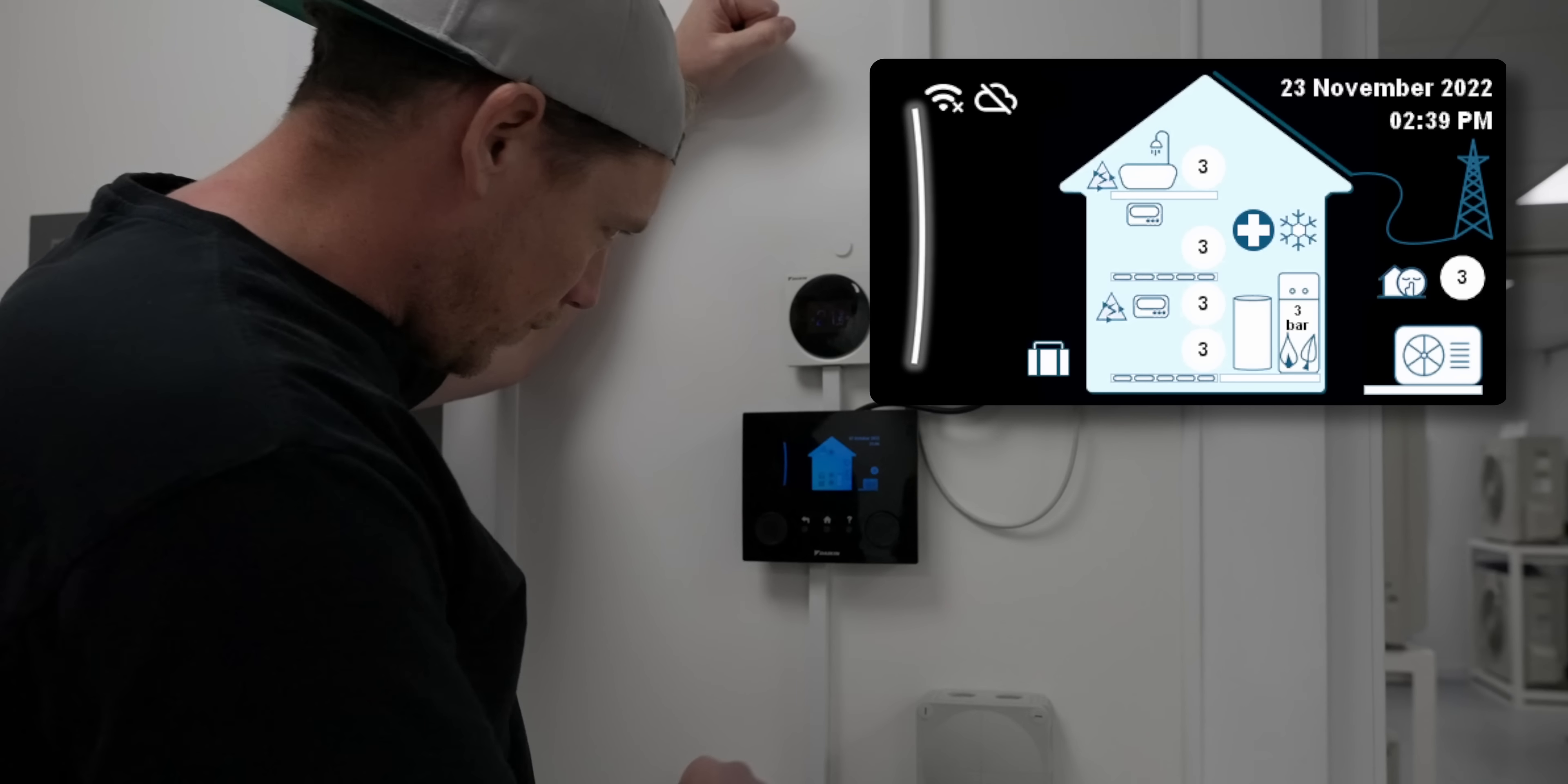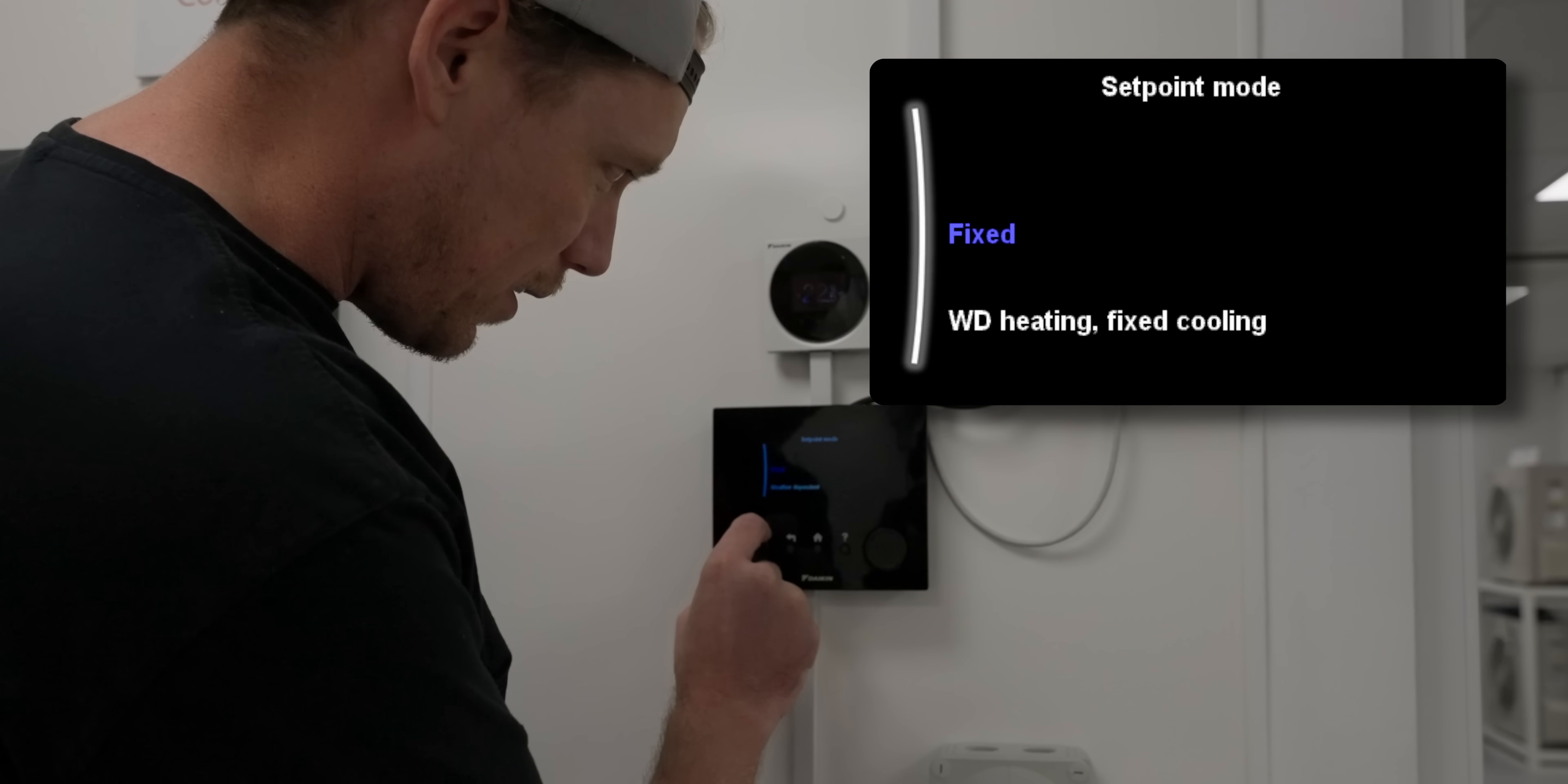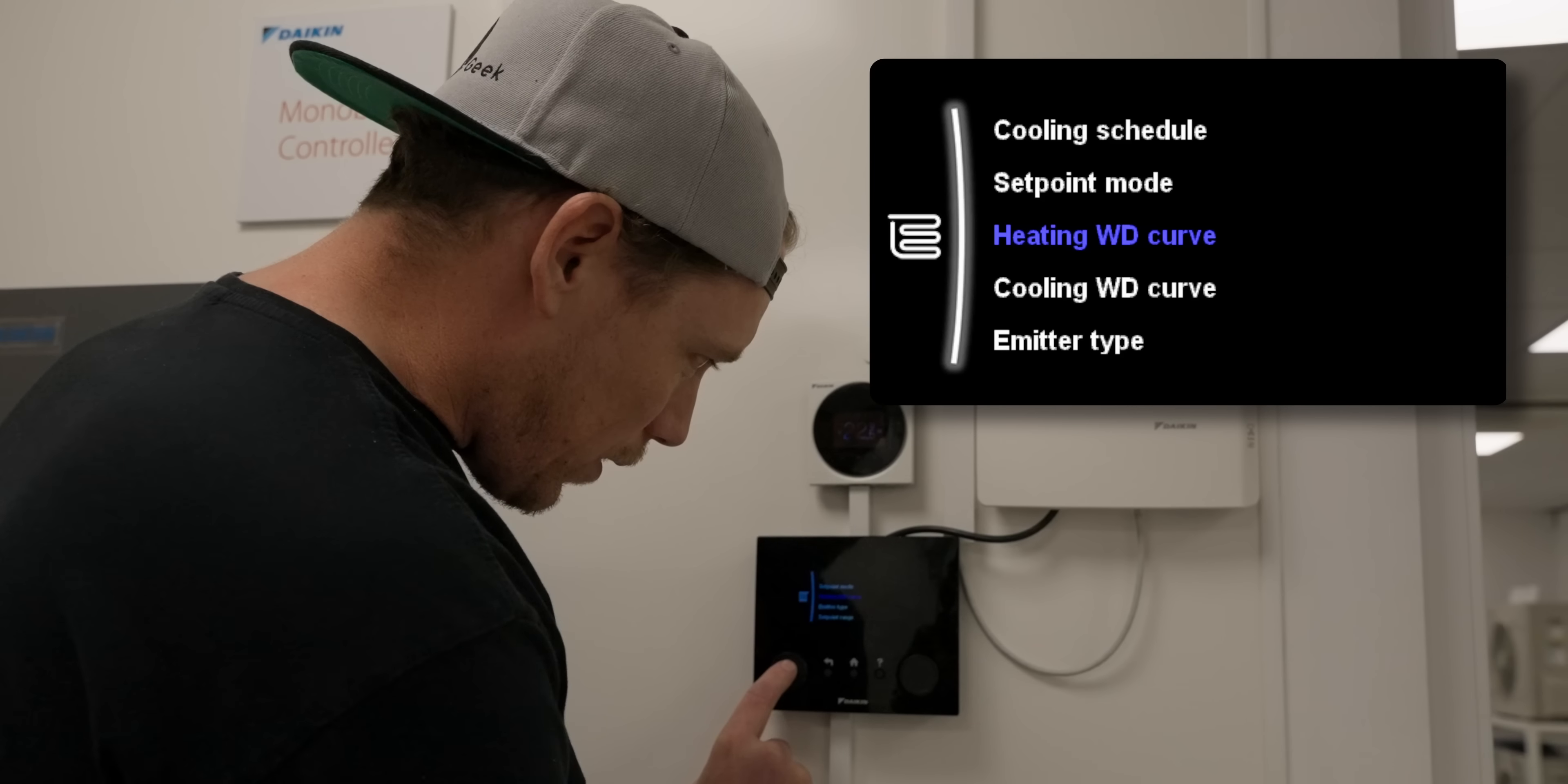From the home screen we're going to go in here, let's go down to main zone. Main zone set point mode fix the weather compensation. So if your Daikin is set to fixed, turn it off and put it on weather dependent. Fix just means it's fixed flow temperature which we don't want, we want weather compensation heating.